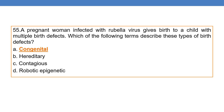Coming to the first question: a pregnant woman infected with rubella virus gives birth to a child with multiple birth defects. Which of the following terms describes these types of birth defects? The child is having congenital birth defects since from birth. Congenital means since birth. So the correct option is A, congenital.